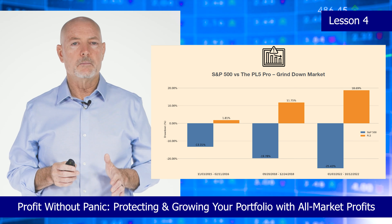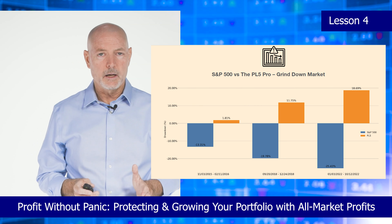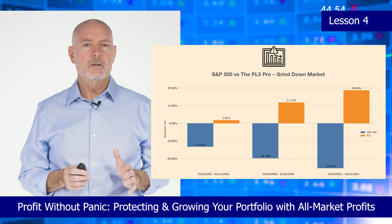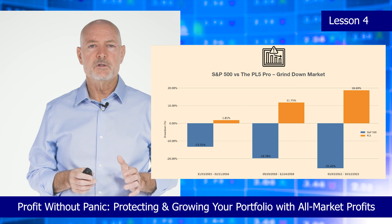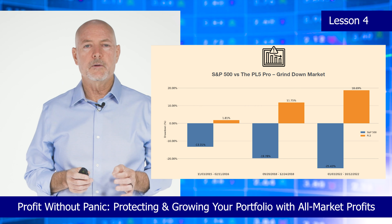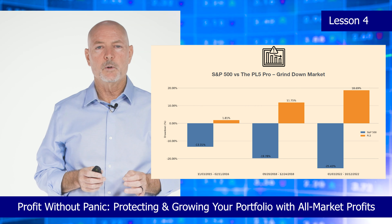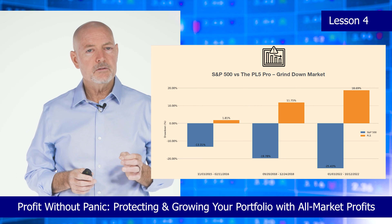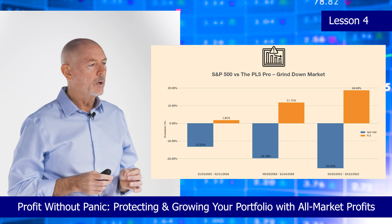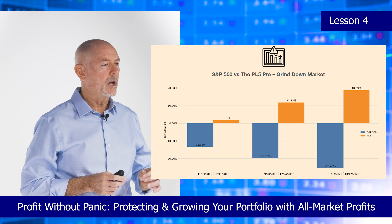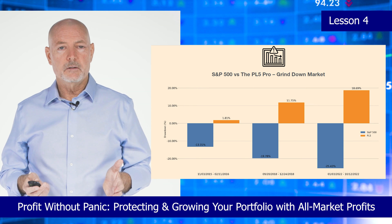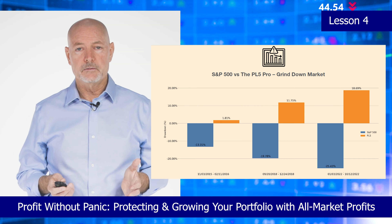A grind-down market is a sustained period of gradual decline, typically around 10% or more. An example is the 2022 market: from January 2022 to October 2022, the market fell minus 25.43%, but the AMP strategy gained 18.69%. In these markets, the AMP shines by leveraging a Greek called charm to navigate the declines and turn losses into gains.